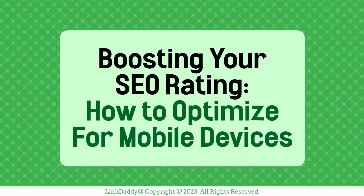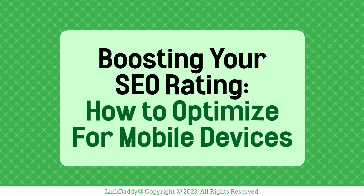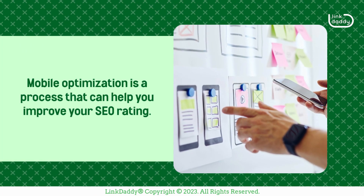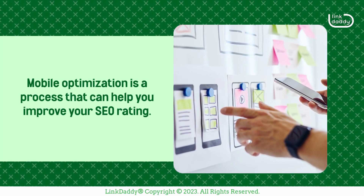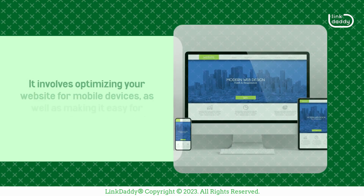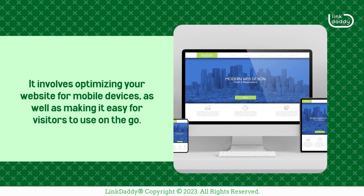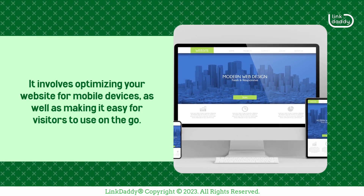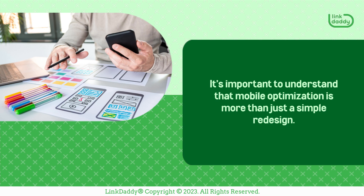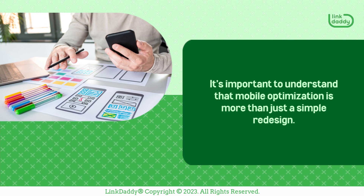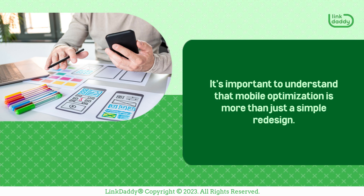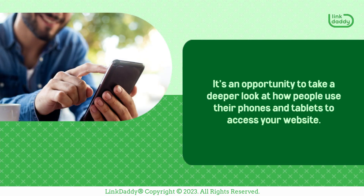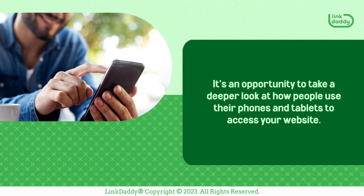Boosting Your SEO Rating: How to Optimize for Mobile Devices. Mobile optimization is a process that can help you improve your SEO rating. It involves optimizing your website for mobile devices, as well as making it easy for visitors to use on the go. It's important to understand that mobile optimization is more than just a simple redesign — it's an opportunity to take a deeper look at how people use their phones and tablets to access your website.